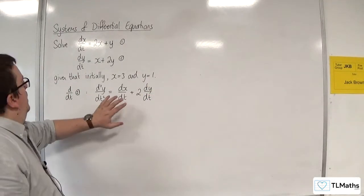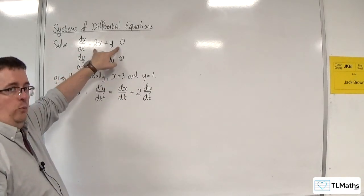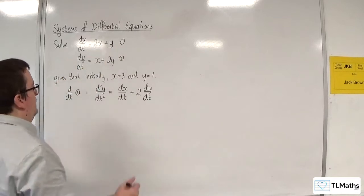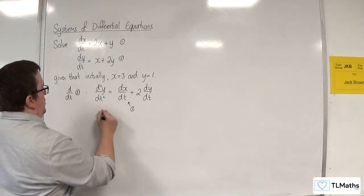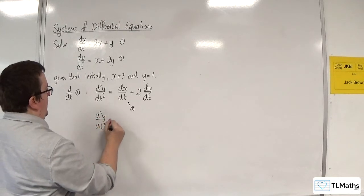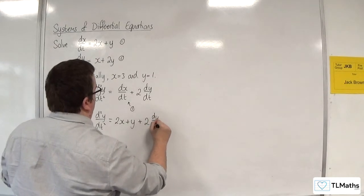Now, I can replace the dx by dt with the 2x plus y from number 1. So I get d2y by dt squared is equal to 2x plus y plus 2 dy by dt.